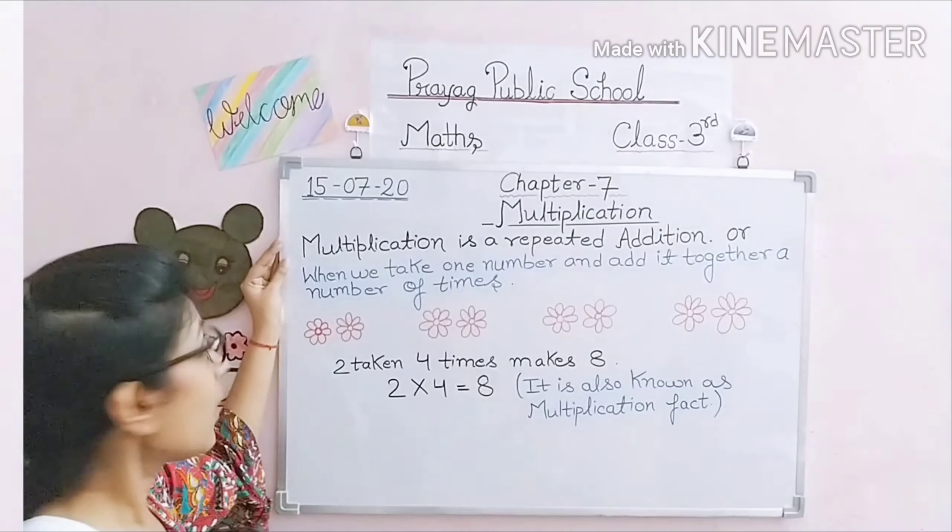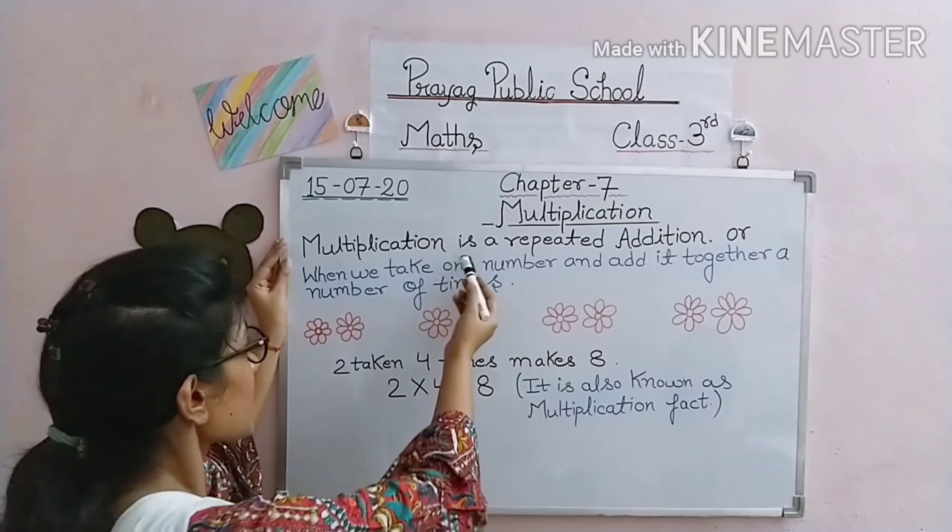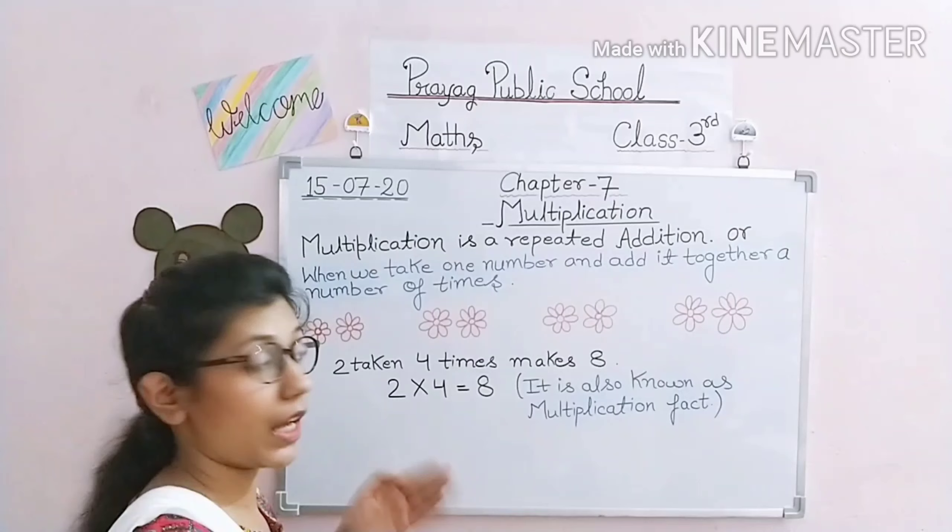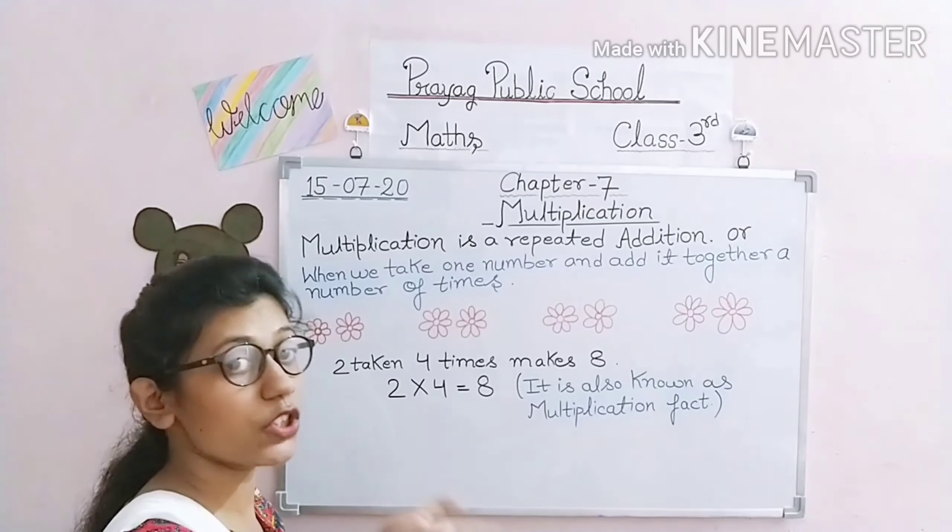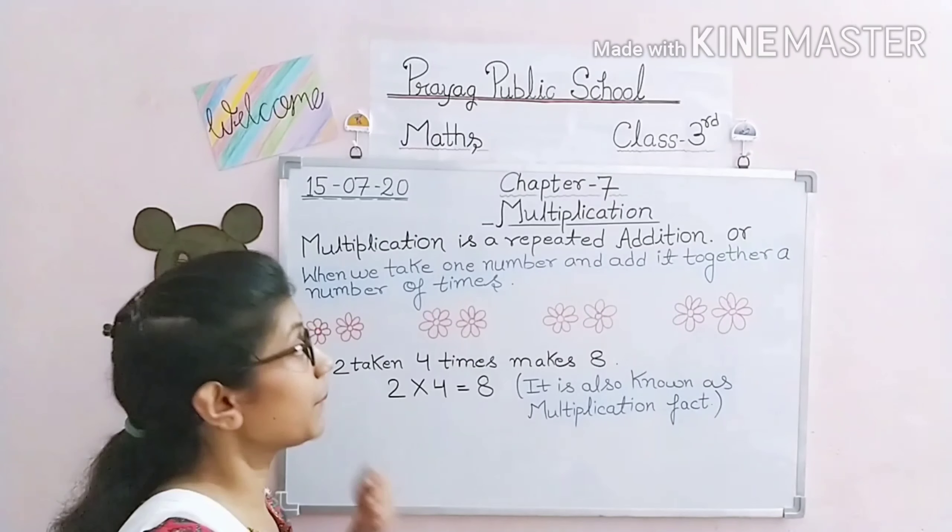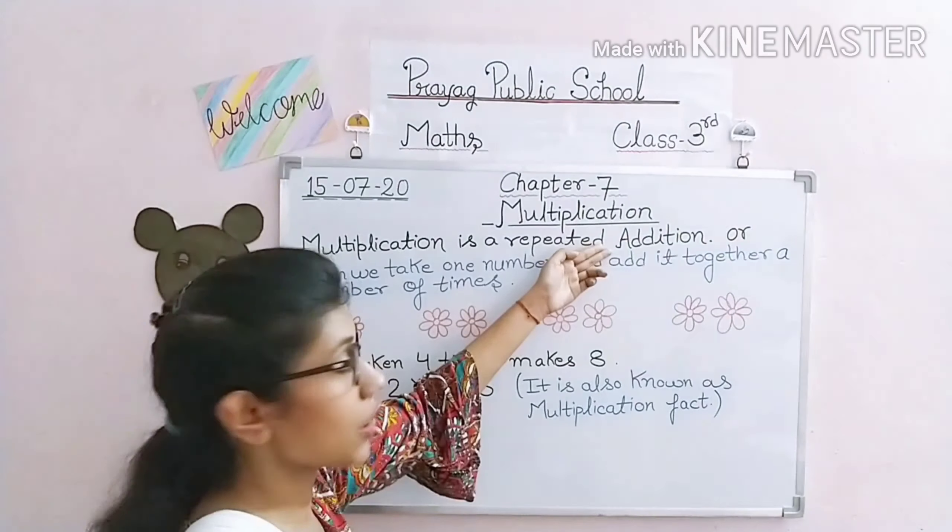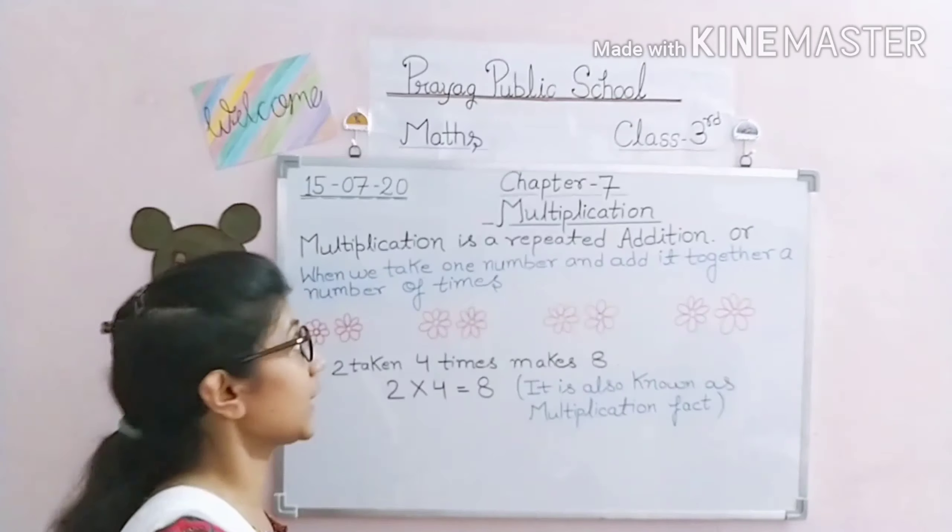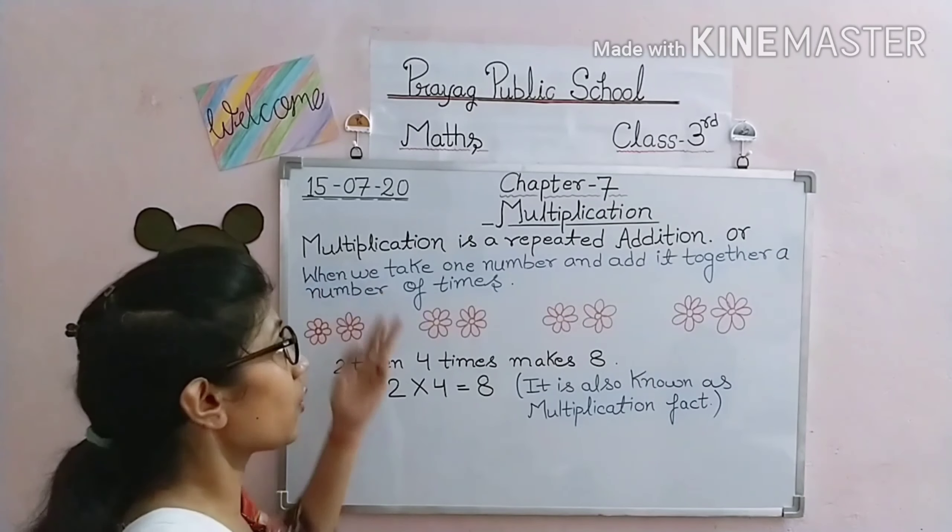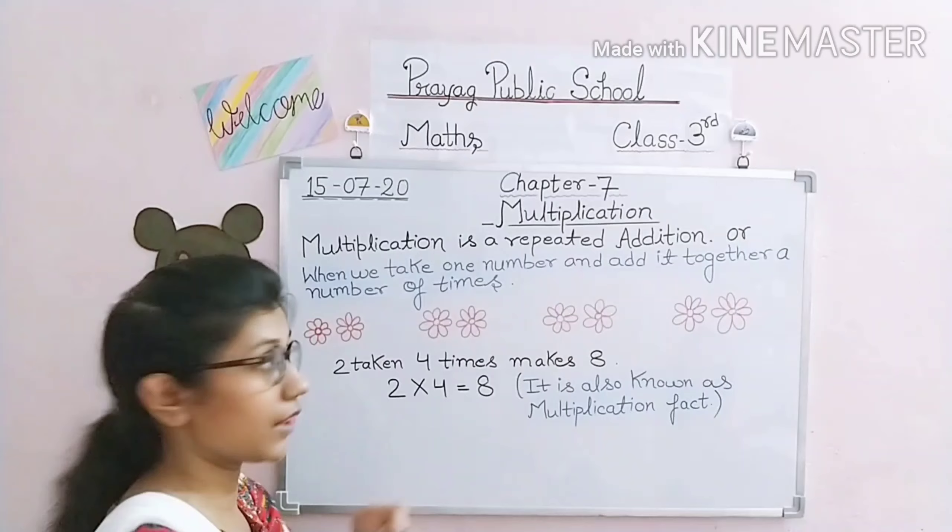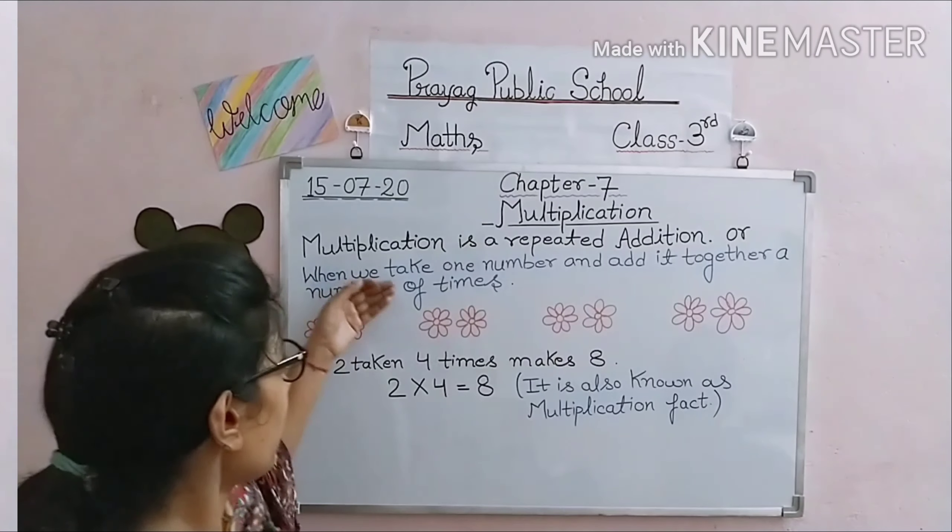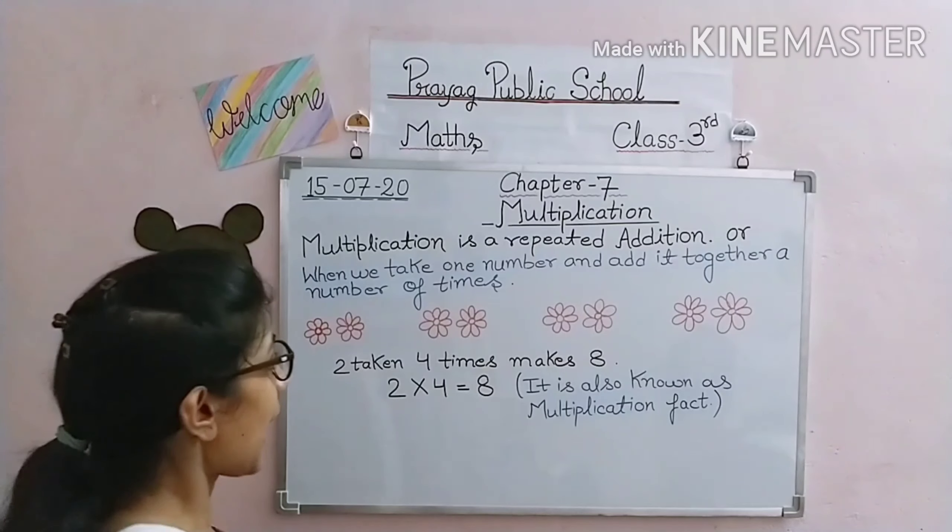So now we start. What is multiplication? Multiplication is a repeated addition. Repeated matlab repeat, matlab doharana. When something happens more than once, we repeat it. In addition we add numbers together, but in multiplication we add things many times.